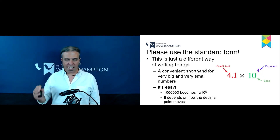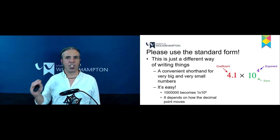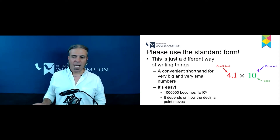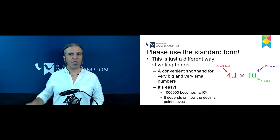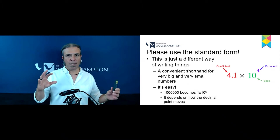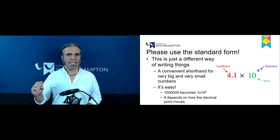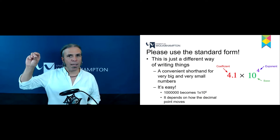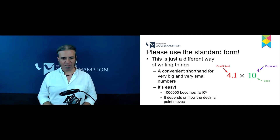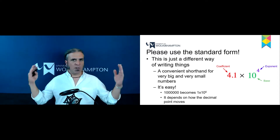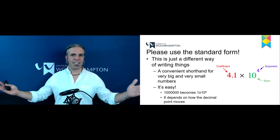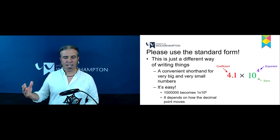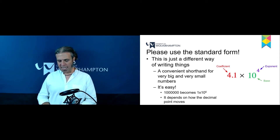We also need to start using standard form. It is a very convenient shorthand to express very small or very large numbers. As you can see in the example, it is made of three different parts: the coefficient, which can be a whole number or a decimal; the base, which is most often 10; and the exponent, which is the small superscript number. So if we want to write one million — a one followed by six zeros — we can express that as 1 × 10⁶.